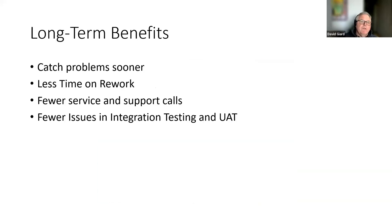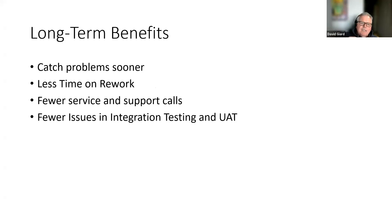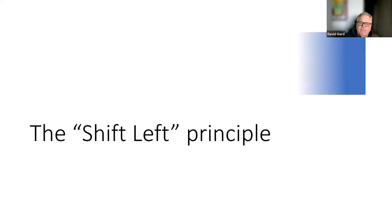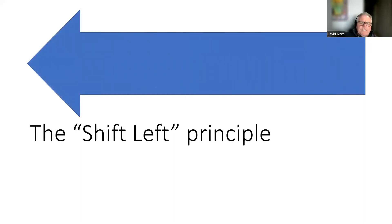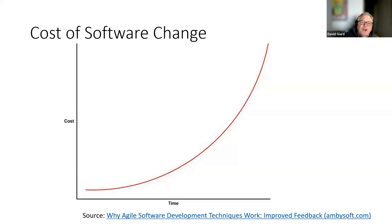There are also long-term benefits. We can catch problems sooner — as with Joe and Jack, don't let users catch it. Catching early reduces rework, reduces service calls, and reduces downstream issues with integration tests and user acceptance testing. This is called the shift left principle: the sooner you catch a problem and correct it, the easier and cheaper it is. The cost of software change increases the longer you wait after writing the code.